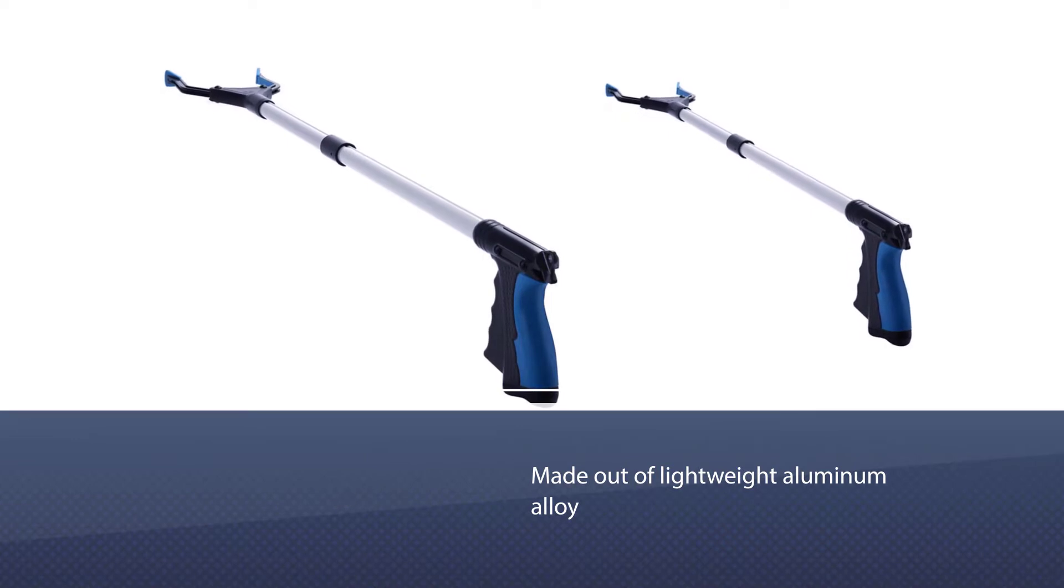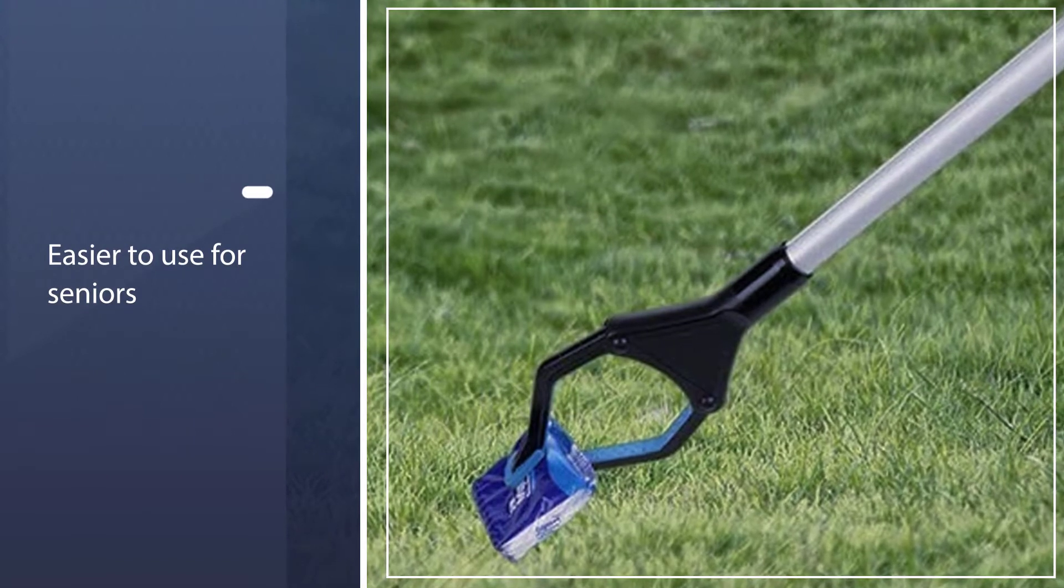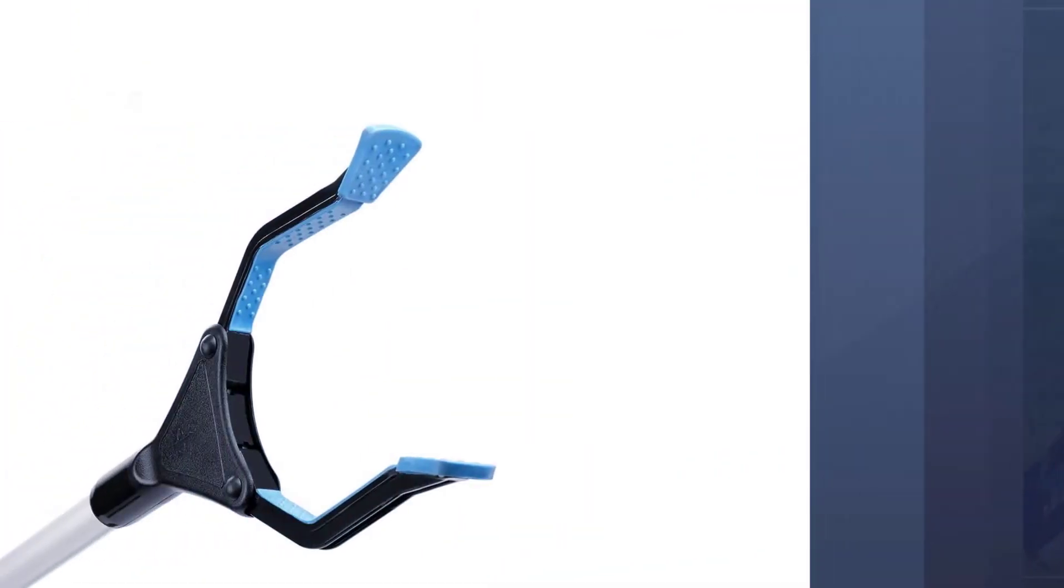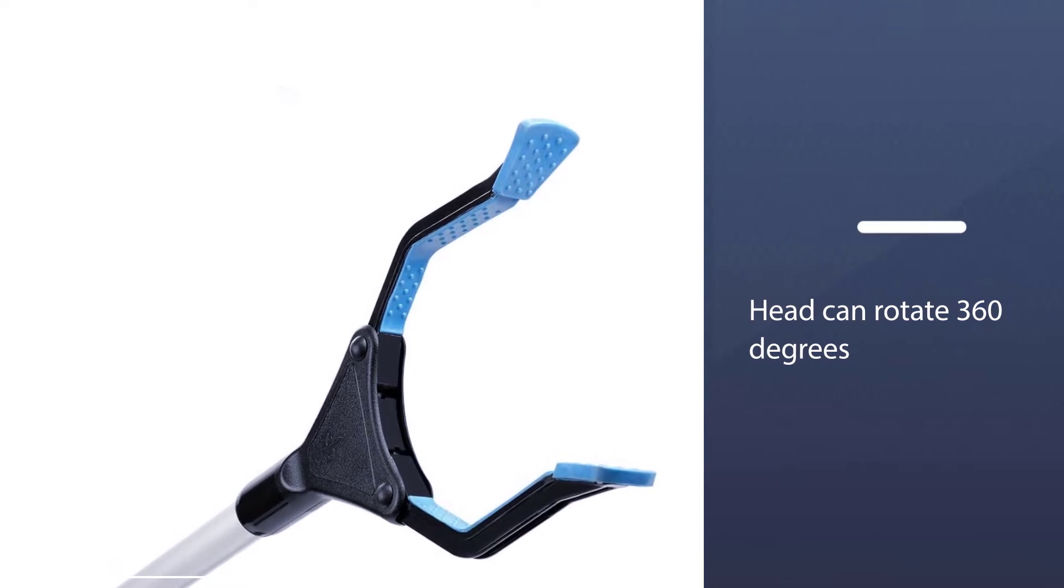The head can rotate 360 degrees and it can be used horizontally or vertically to get into small confined spaces. The reacher grabber tool is also foldable and compact to make it easy to carry around and store.